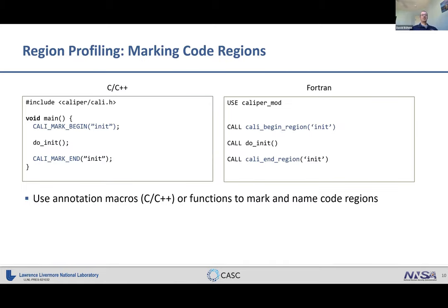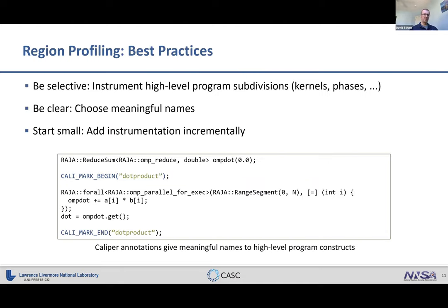Once Caliper is linked to your code, it's time to mark code regions. Region profiling is a core functionality — we have annotation macros and functions to mark functions in your code or name code regions. It's pretty simple with begin/end macros, or begin/end functions in Fortran.